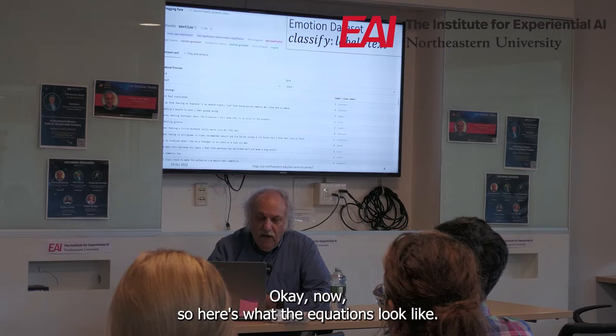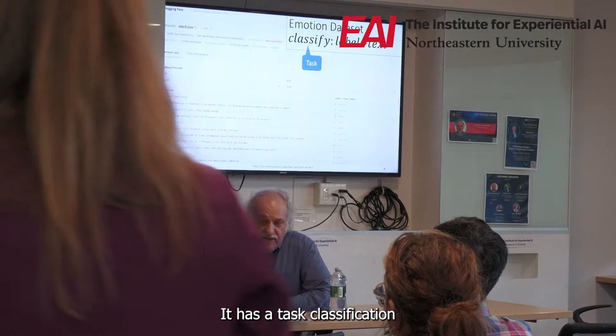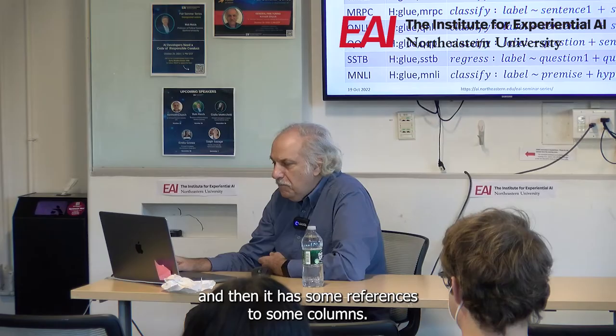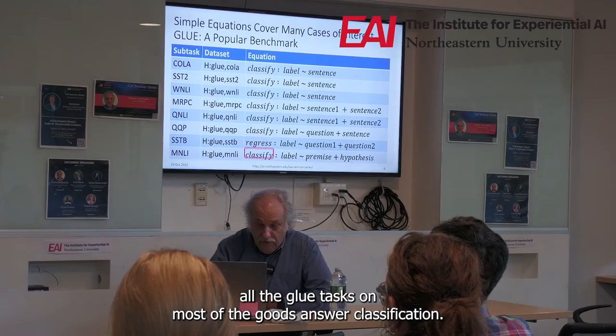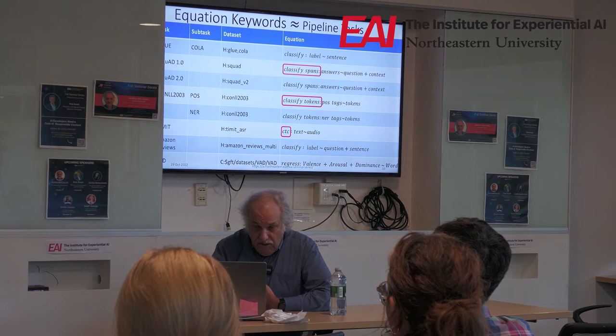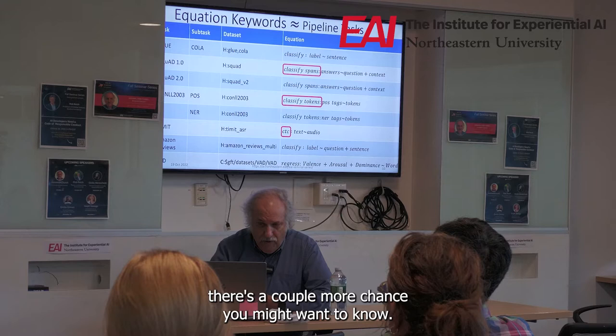Here's what the equations look like. It has a task — say classification — and then it has some references to some columns. Glue is a standard benchmark. This is basically the solution to all the Glue tasks — about eight out of nine — shown on one screen. That's pretty much all you need to do in order to do all the Glue tasks. Most of the Glue tasks are classification, but one of them is regression. There are a couple more tasks you might want to know about beyond Glue.